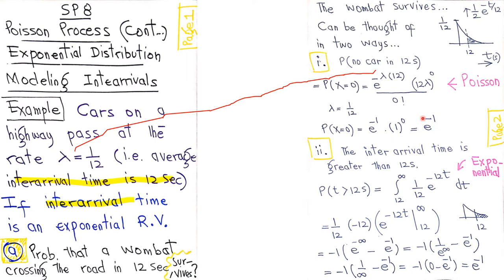This comes out to be e to the minus 1. Another way of representing this is in terms of inter-arrival time. The wombat survives if the inter-arrival time is greater than 12 seconds — meaning if a car passes and the wombat starts moving, there is no car for the next 12 seconds. This can be modeled using the exponential distribution.